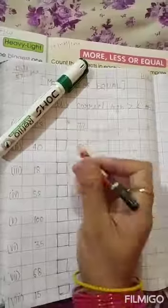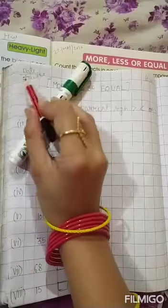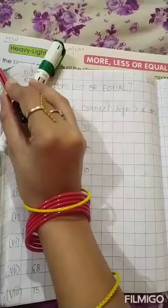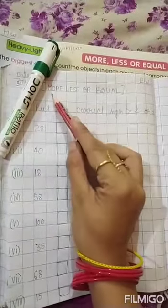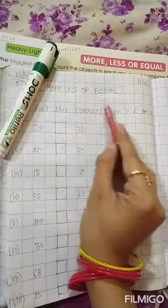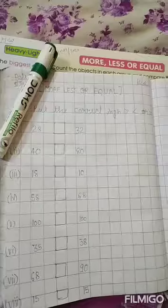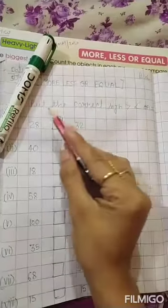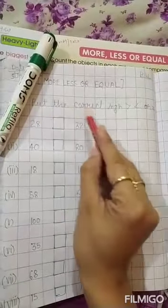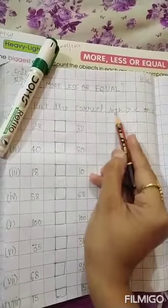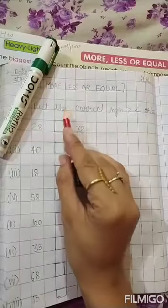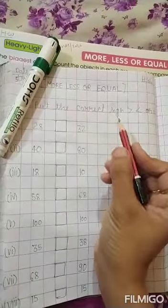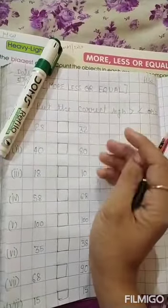Look, see. First of all, you will have to mention the date, which should be written in a good way. Chapter name is More or Less or Equal. You will write it in a good way. You will have to mention it in copy. Put the correct sign. Okay. I have also told you about this in the book.